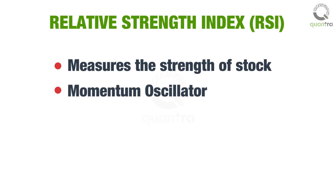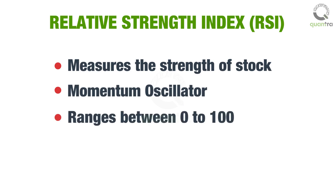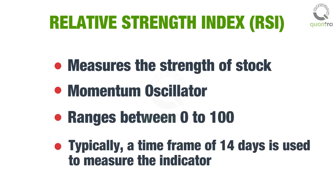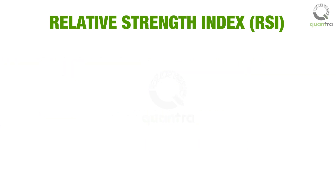RSI is measured in a range of 0 to 100. Typically, a time frame of 14 days is used to measure the indicator. RSI can be calculated by using the simple formula: RSI equals 100 minus 100 divided by 1 plus RS.